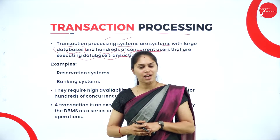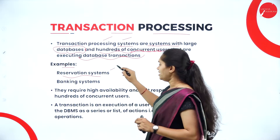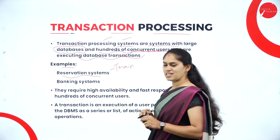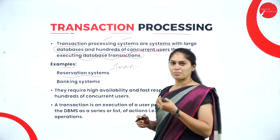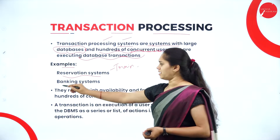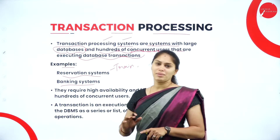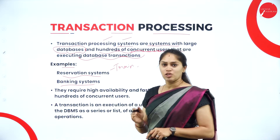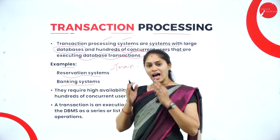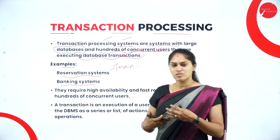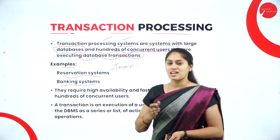Where can we see this kind of transaction processing system? An example is a reservation system — booking seats in a train, bus, or even booking a movie ticket using apps like BookMyShow. Another example is banking systems, where there are large numbers of databases and many users accessing concurrently. Usage is not limited to a single time window; at any particular time, concurrent usage of that application will be huge.